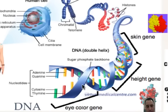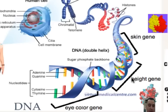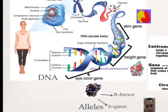Looking a little more into DNA, there are pieces — sections called genes. Each gene will make a protein. So here we have the skin gene, this section is called the height gene, and this section is called the eye color gene. A gene is a section of DNA that has instructions to make a protein — the height gene will make a height protein, and the skin gene will make skin proteins.